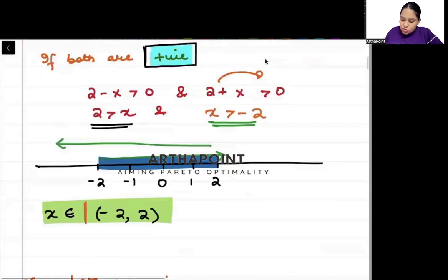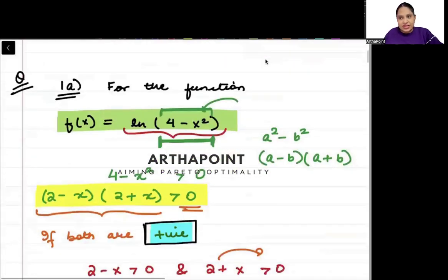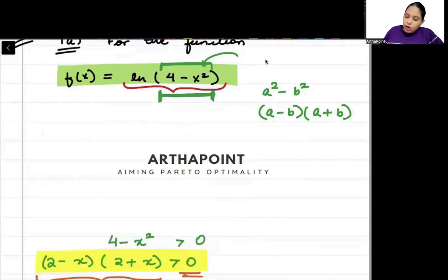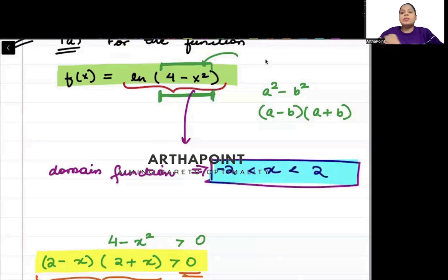It is only defined as long as it is greater than 0, so there's no equal to sign. So minus 2 and 2 are not included here. The values that x can take is called the domain of the function. So in this case, what is going to be the domain of the function? The domain of the function will be x between minus 2 to 2. Is this clear? So this is how you can find the domain of the function.